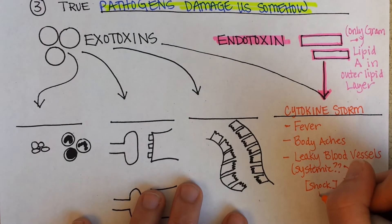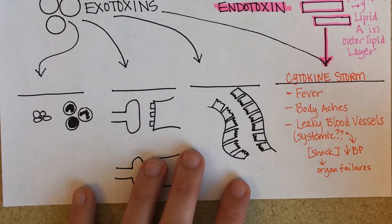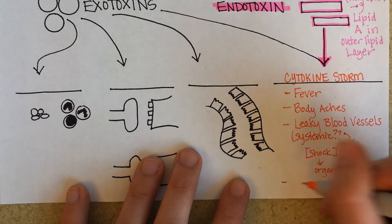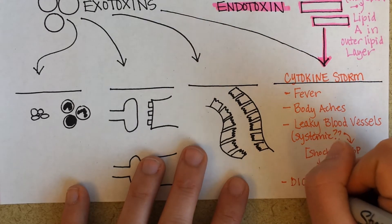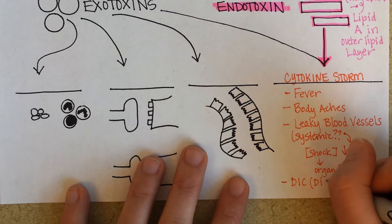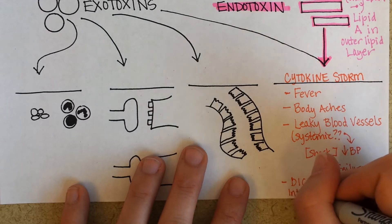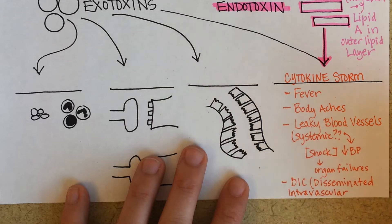The scary thing about that is it can lead to organ failure, because if the organs aren't getting enough blood, then they can stop working. And then one final scary symptom of a cytokine storm is what's known as DIC, or disseminated — meaning spread out — intravascular clotting. So little tiny strokes could occur all throughout the patient.